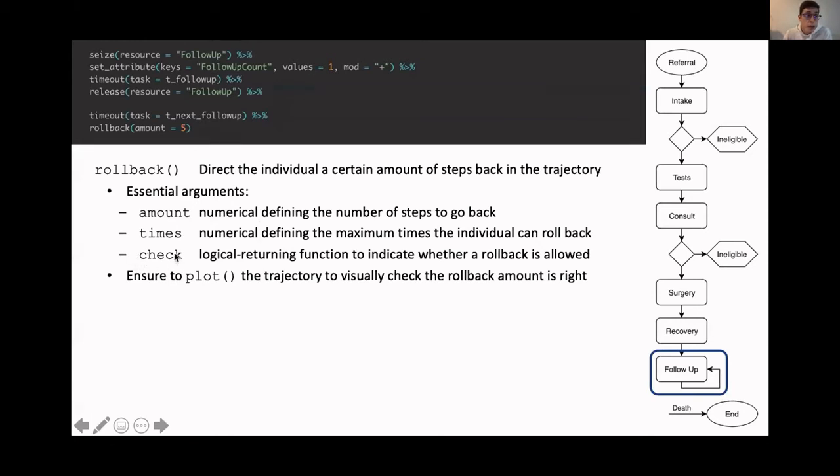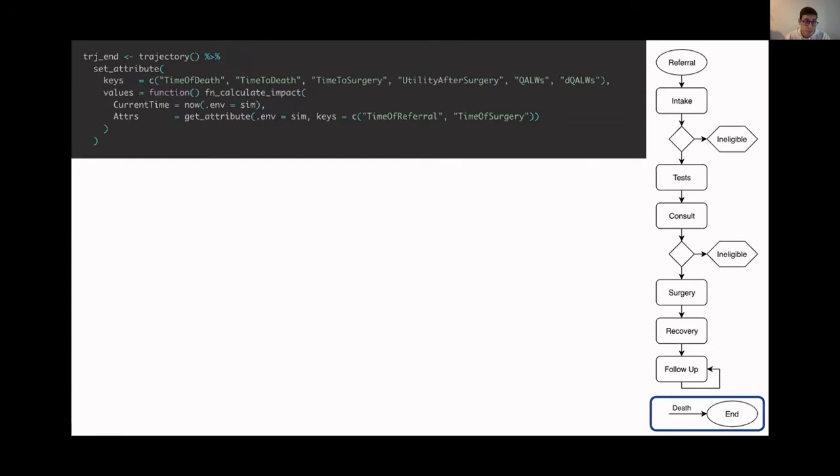Other arguments that you can use is, you can use the times argument to define a maximum number of rollbacks that are allowed. Or you can define a function for the check argument that returns a true or false, indicating whether the rollback can be performed or not. And I know from using the Simmer package in the early days, you could not plot trajectories. So for complex models, it was a bit of a pain to find out whether your rollback amount was right or not. But nowadays, you can easily plot your trajectory to see whether you put in the right amount. And like I noted, here we use the mod argument to the set attribute function to update rather than set the value.